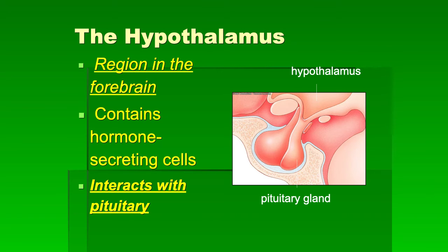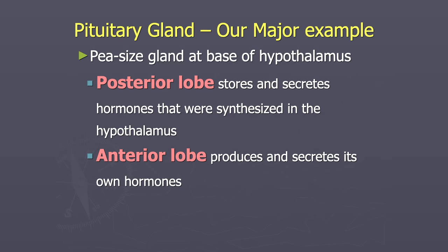The hypothalamus is a region of the forebrain that contains hormone-secreting cells. It interacts with the pituitary gland, which is the master gland — a pea-sized gland at the base of the hypothalamus. The posterior lobe stores and secretes hormones synthesized in the hypothalamus, while the anterior lobe produces and secretes its own hormones.